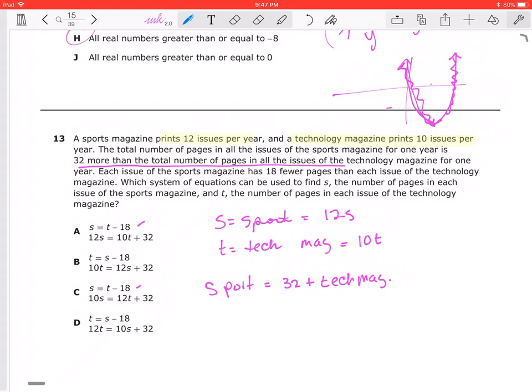So let's see. This one here is S equals T minus 18. This one here is T, the technology equals S minus 18. That part's great, so let's work this out.